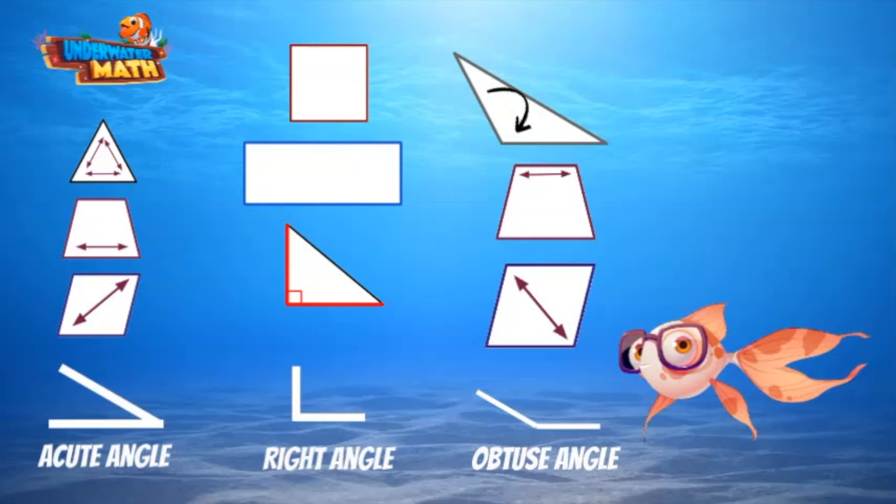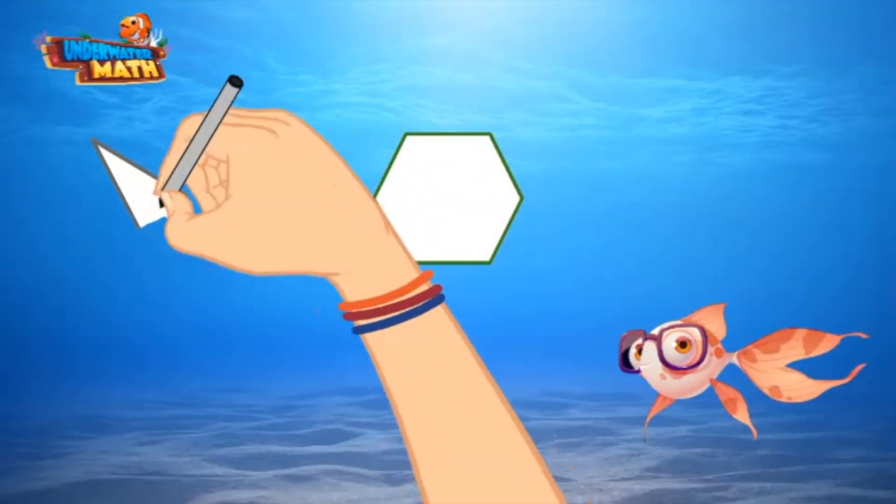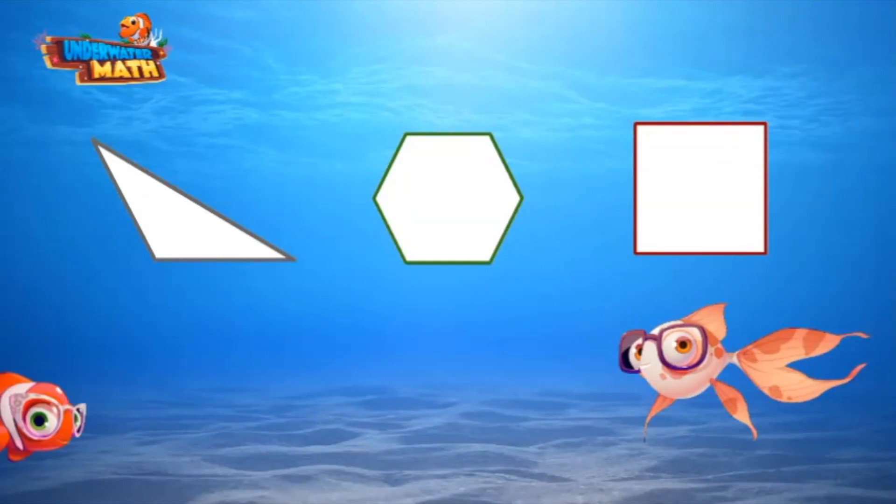Let's see if we can classify shapes based on angles. Hey Alicia, I'm thinking of an object that has at least two obtuse angles. Do you know which one it is?